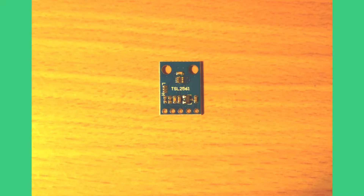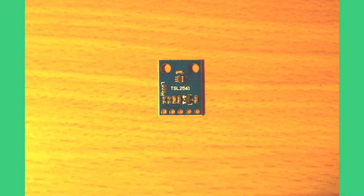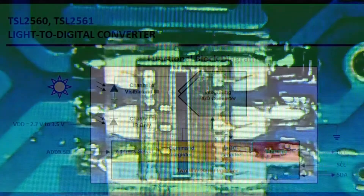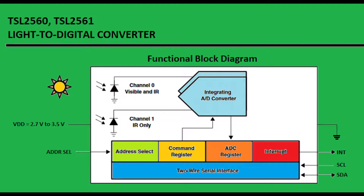The TSL2561 are light-to-digital converters that transform light intensity to a digital signal output capable of direct I2C. Principal characteristics of the sensor are approximate human eye response, 16-bit digital output, automatically reject 50 and 60 Hz lightning ripple, and programmable analog gain and integration time. The TSL2561 are second-generation ambient light sensor devices, each containing two integrating analog-to-digital converters that integrate currents from two photodiodes.